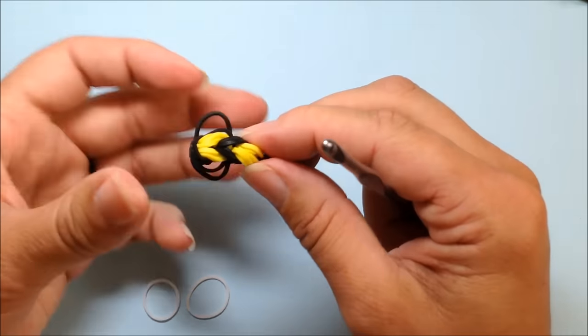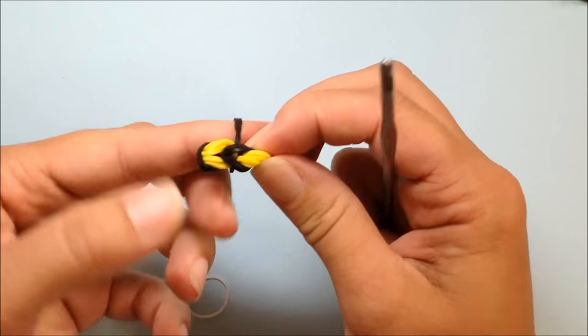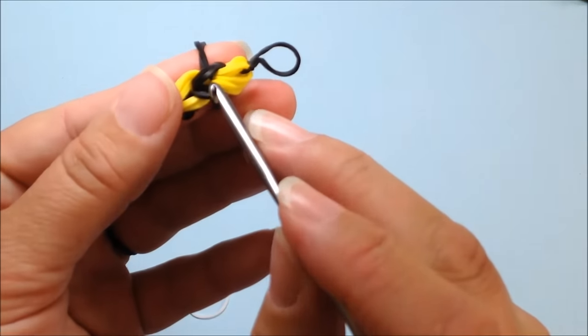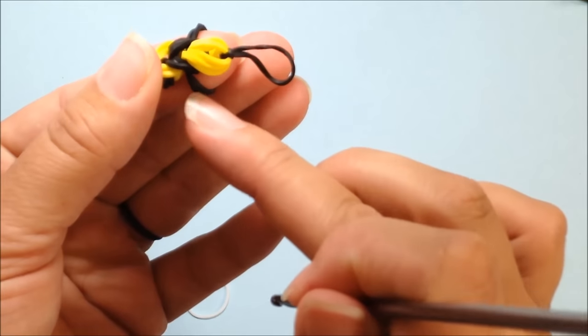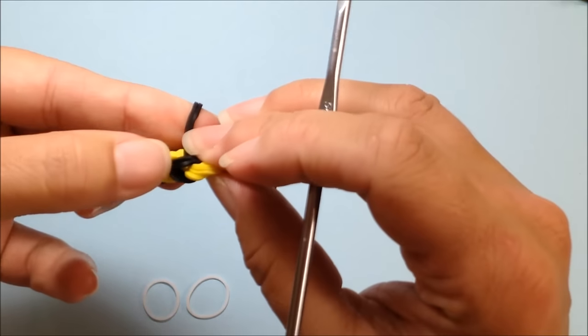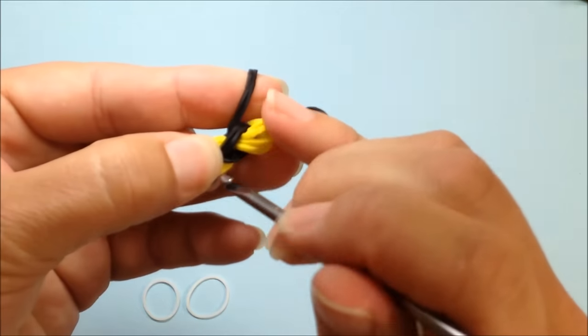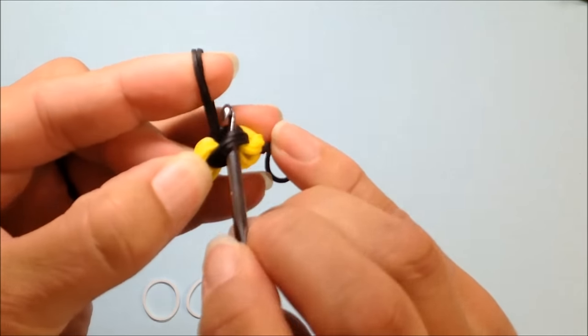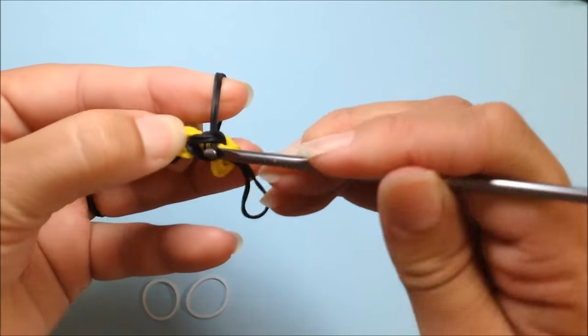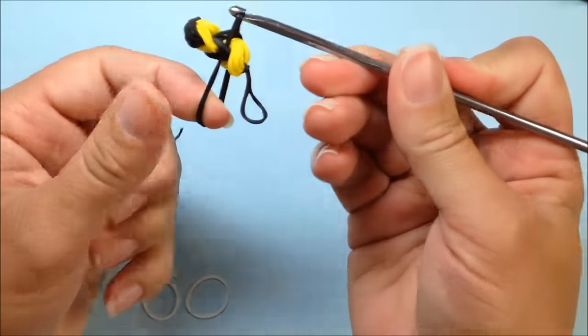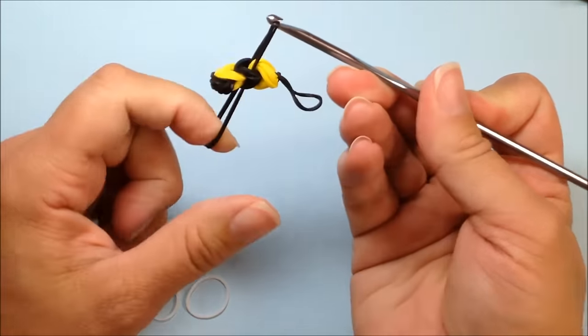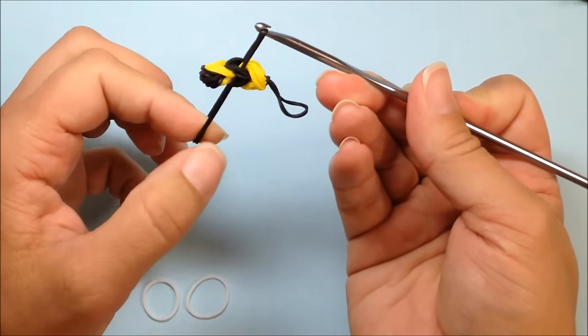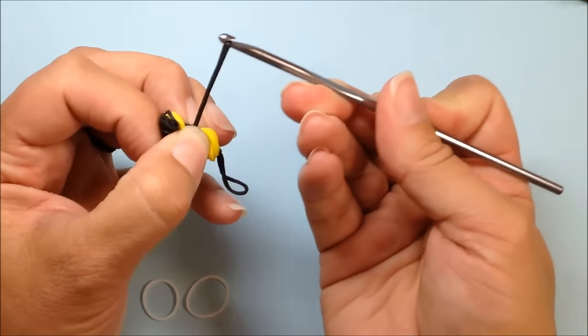You want to flip your bug over and you want to reach into this black piece and you want to get these two black bands that are underneath. So you want to reach in and grab those two bands and pull that up through a little bit. So you've found your black bands that you have down here on your finger, on your hook.